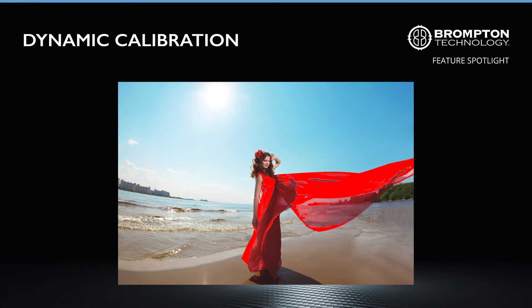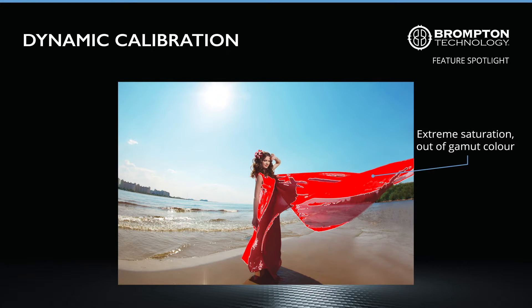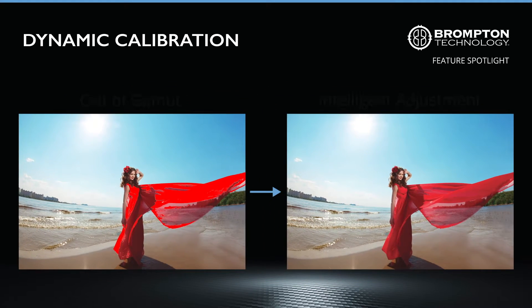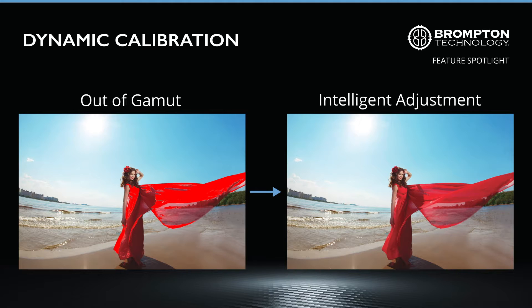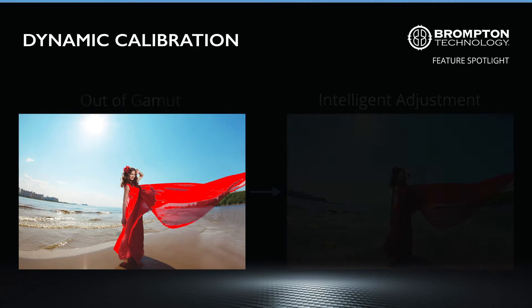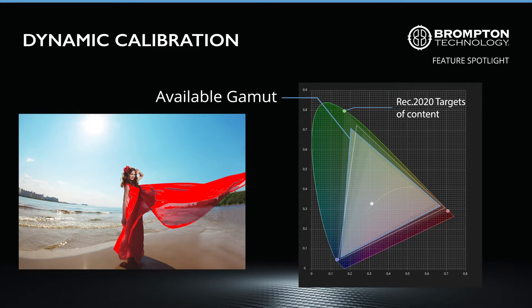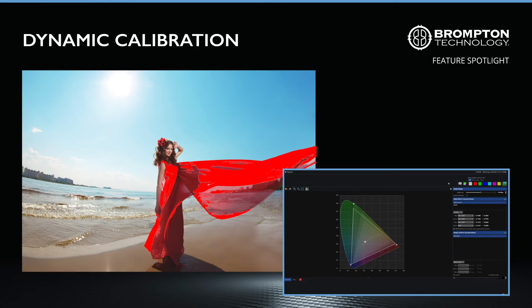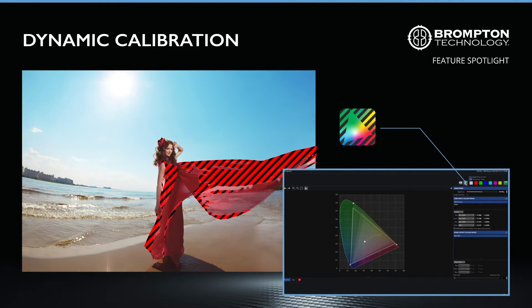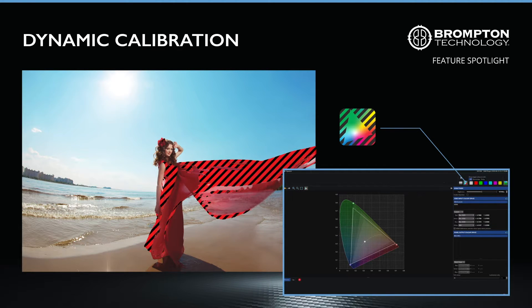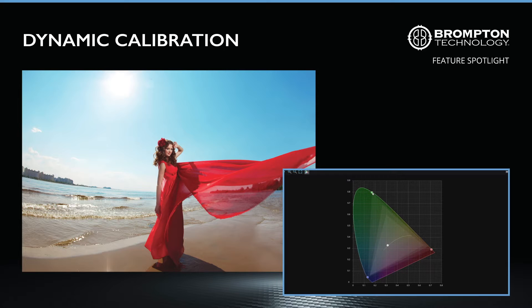Extreme saturation is also often required when displaying HDR content. In these areas, dynamic calibration adopts an intelligent approach to handle out-of-gamut colours for your LED panels, taking full advantage of the available colour gamut of the LED panels being used. The Tessera software will show you the colour gamut capabilities of your LED panels, while the Zebra Pattern tool will dynamically highlight the areas of your content that are out of gamut. The colour targets can be adjusted manually in real time, to any custom setting, or set to any industry standard colour space, such as Rec.709, DCI-P3, or Rec.2020. The white point is also fully user adjustable, without any need for recalibration.